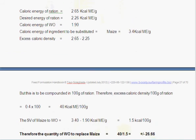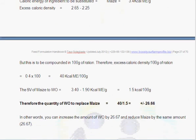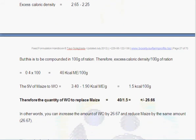I'm hoping you can see how we got to the 0.4, which is the difference between the 2.65 and the 2.25. That's the excess calorie density, that's what we've multiplied by 100 here.